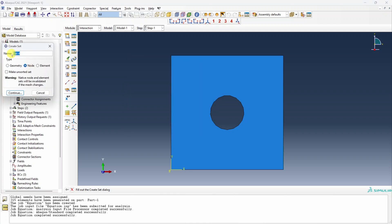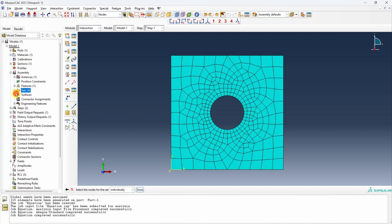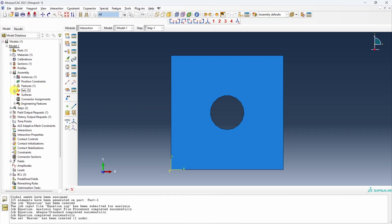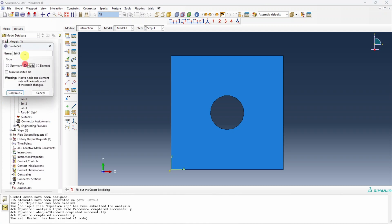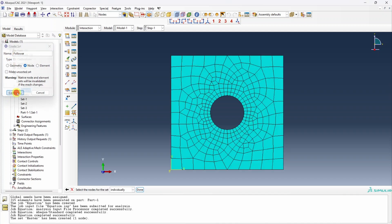For that you have to go in this assembly and then double click on this set. First I am going to create master set which is just one node on the corner. So select this node over here. So we have one master node set. And then same process, another node set. Here we will say follower. For this I will choose all the nodes on this right edge except the corner one.